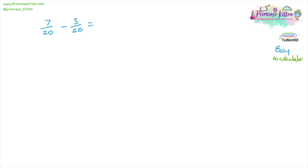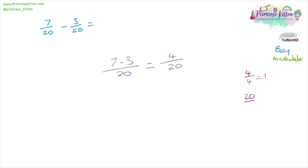Seven over 20 minus three over 20. Seven minus three over 20 equals four over 20. Both of those numbers are divisible by four, so four divided by four gives us one, and 20 divided by four gives us five. So the answer is one over five.